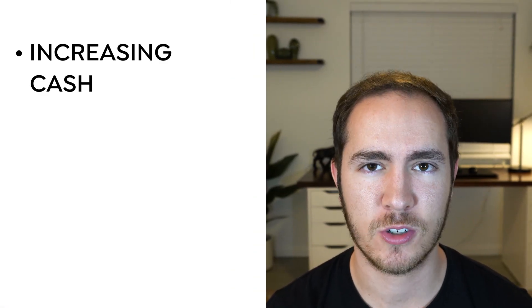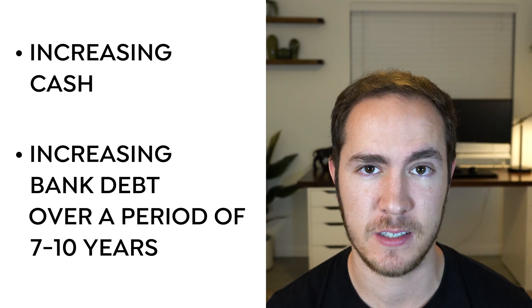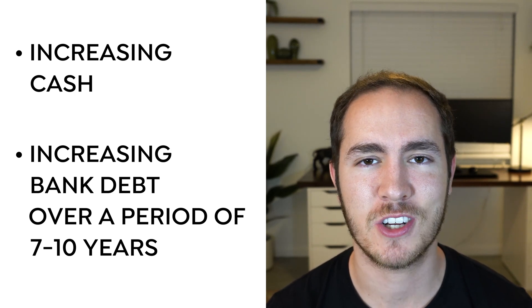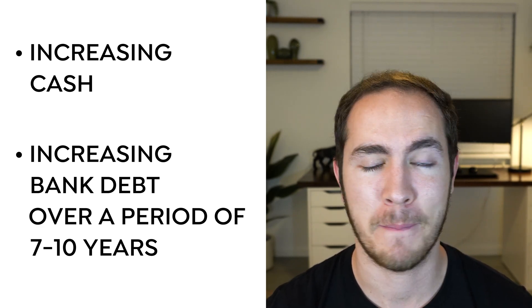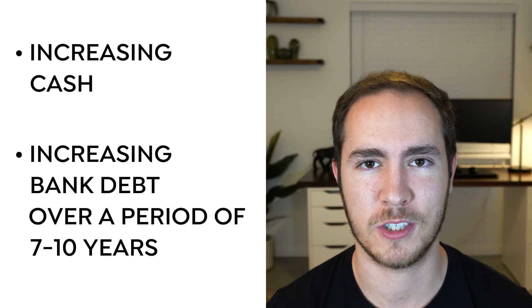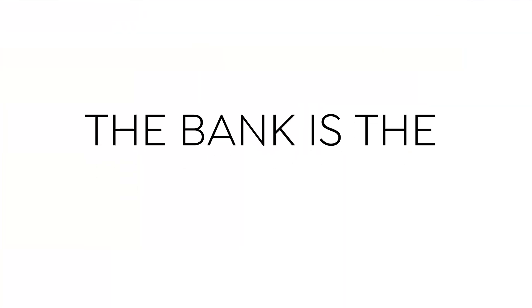This is how Warren staked his reputation as one of the greatest investors of all time. What Warren is looking out for — a bad sign — is a company that has increasing cash but also increasing bank debt over a period of seven to ten years, because that indicates the company is reliant on bank debt to fund its operations. That's what is adding to the cash balance: bank debt, not purely money from its own operations. If the bank cut off funding to a company like that, the company would fail. The bank is its lifeline — it can't generate the cash on its own to sustain life without it.